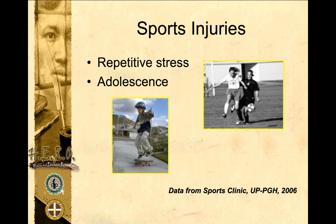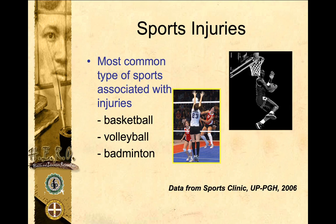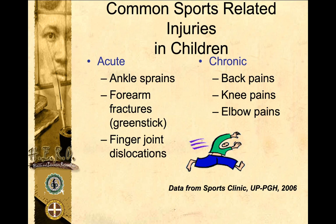Sports injuries in children are caused by continuous or repetitive stress and are common in adolescence — these are called stress fractures. The most common sports associated with injuries in the Philippines are basketball, followed by badminton and volleyball. There are different types of sports-related injuries according to time: acute and chronic. Acute injuries include ankle sprains, forearm fractures, and finger joint dislocations. Chronic injuries include recurrent back pain, recurrent knee pain, and recurrent elbow pain.